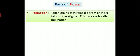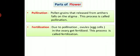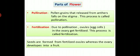Pollination: pollen grains that released from anthers fall on the stigma of the flower. This process is called pollination. Fertilization: due to pollination, ovules or egg cells in the ovary get fertilized. This process is called fertilization. Seeds are formed from fertilized ovules, whereas the ovary develops into a fruit.